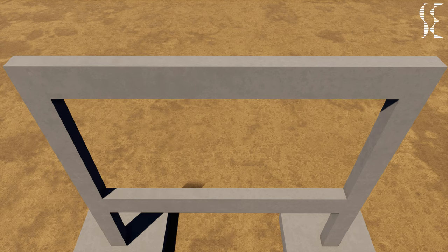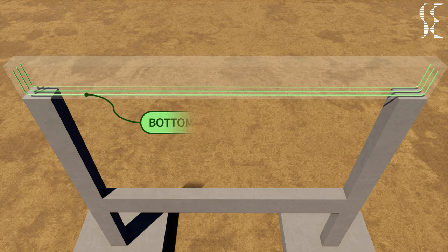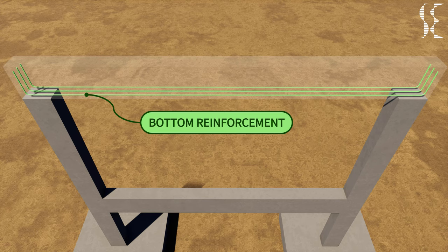First, we will see the reinforcement distribution in a single-span beam and later we will have a look at multi-span or continuous beam. In a single-span beam, first we have bottom reinforcement which resists the beam from bending stresses. They also resist the tension cracks which occur at bottom of beam since concrete is weak in tension.